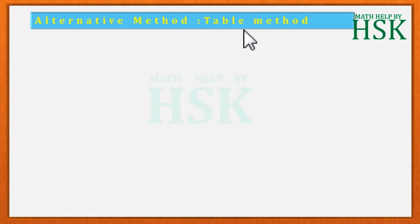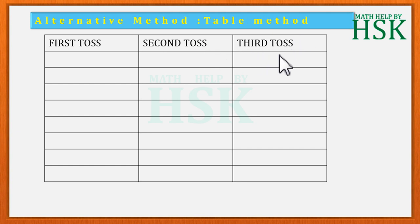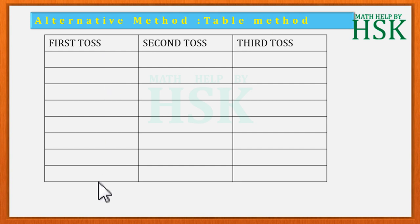Now we shall write the sample space by the table method. For this we make a table in which the first column represents the outcome of the first toss, the second column represents the outcome of the second toss, and the third column represents the outcome of the third toss. The idea is to fill the columns with outcomes so that all possible events — that is, the sample space — are obtained.